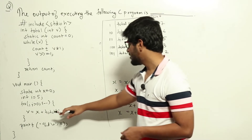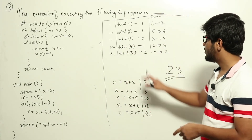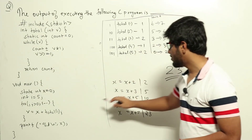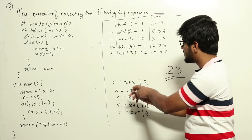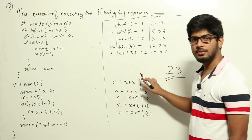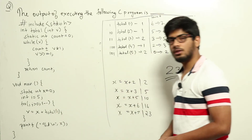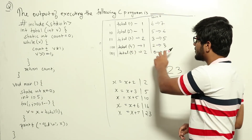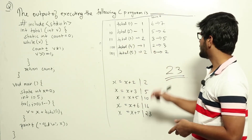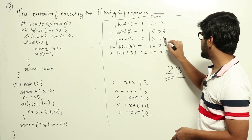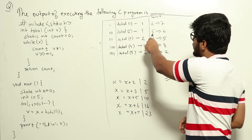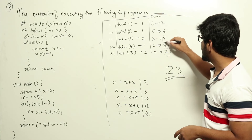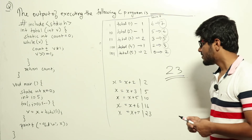Now let's trace the execution. Initially x is 0 and count is 0. We call total(5): adds 2 to count, count becomes 2, returns 2. Then total(4): adds 1 to count, count becomes 3, returns 3. Then total(3): adds 2 to count, count becomes 5, returns 5. Then total(2): adds 1, count becomes 6, returns 6. Then total(1): adds 1, count becomes 7, returns 7. So the return values for total(5) through total(1) are 2, 3, 5, 6, 7 respectively.